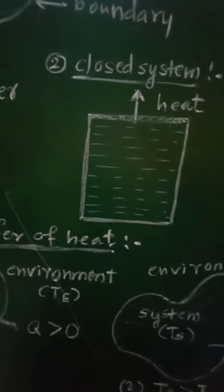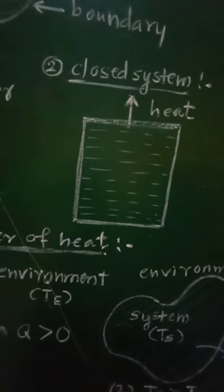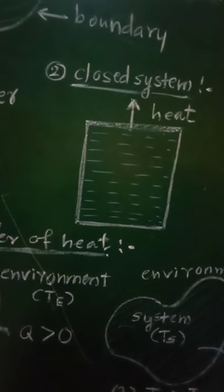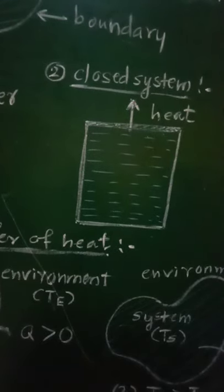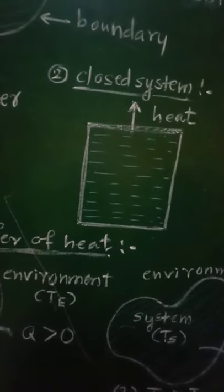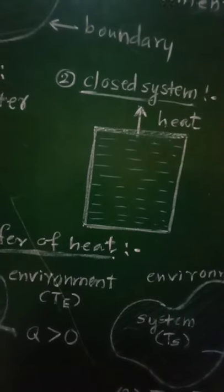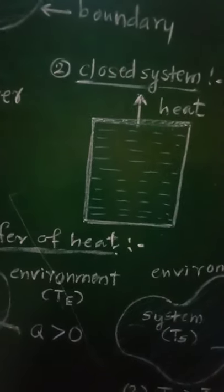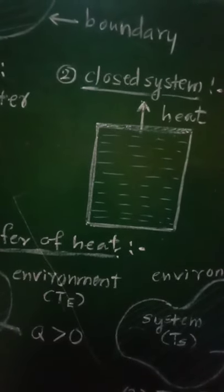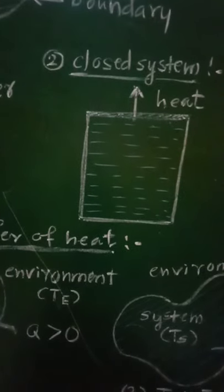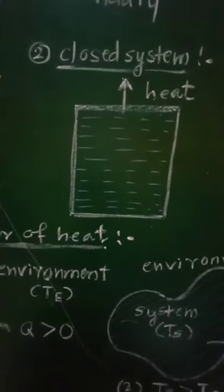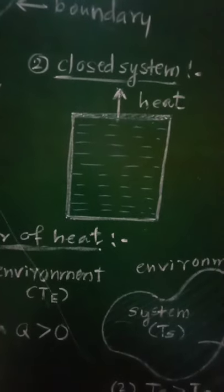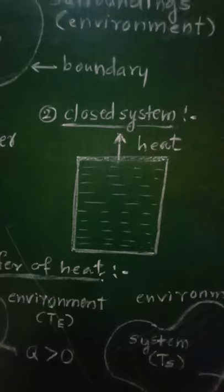For example, water boiling in a boiler acts as a closed system. It allows heat, that is energy, to be transferred from the source of heat like a burner to the water inside. Similarly, heat is also transferred to the surroundings. Steam, that is matter, is not allowed to escape as long as the lid is kept closed. So in the case of a closed system, there is exchange of only heat energy and not matter.